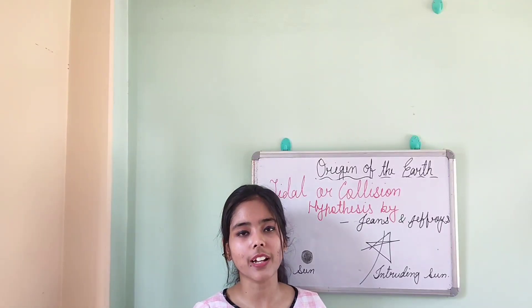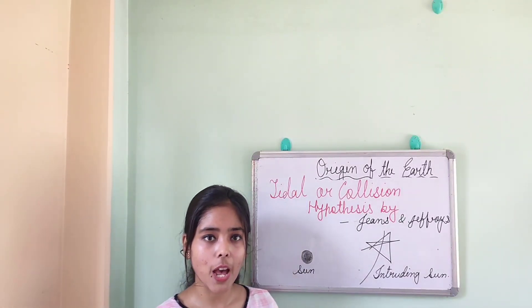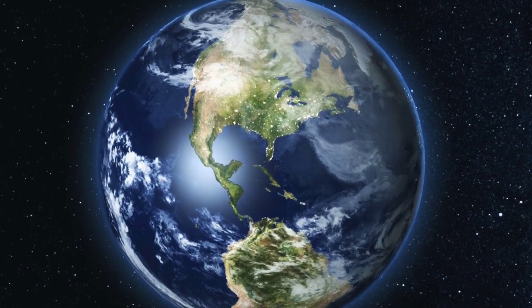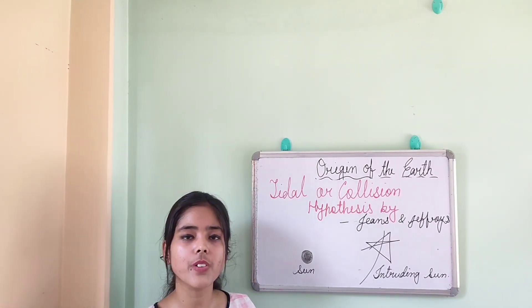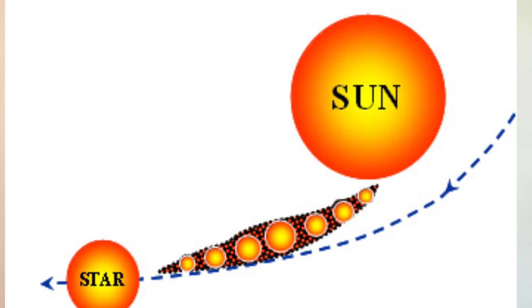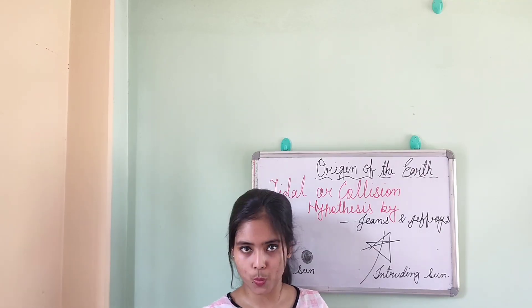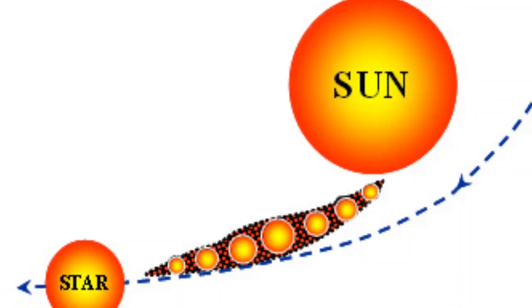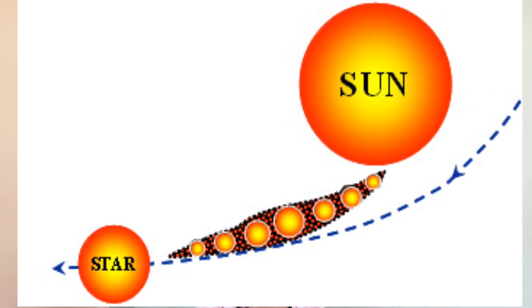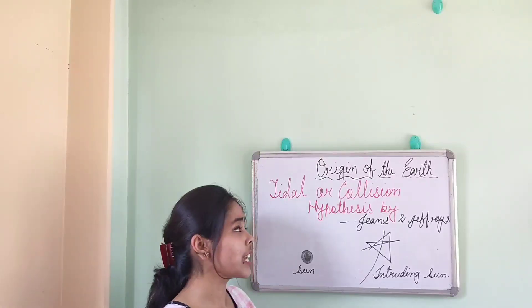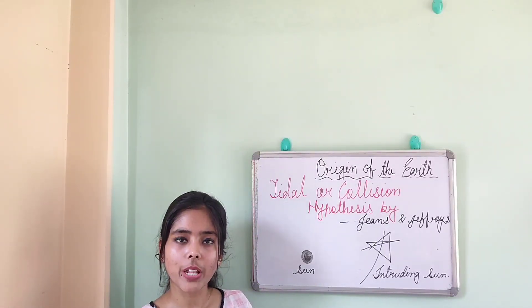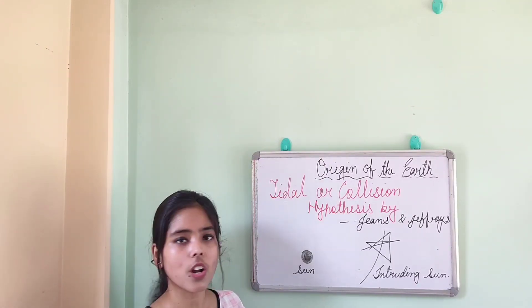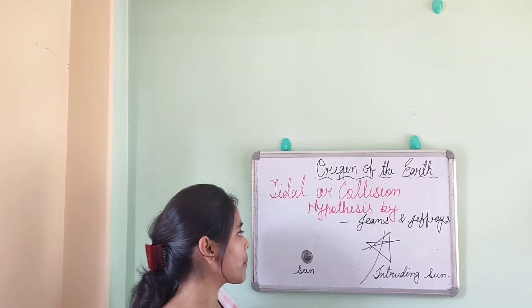Hello, dear students. Welcome to your geography class. In this class I am going to discuss the next theory or hypothesis regarding the origin of the earth. In the last class we discussed the planetesimal hypothesis, which was based on a dualistic approach. Dualistic means there were two different heavenly bodies from which the earth originated — that theory is known as a dualistic theory.